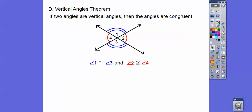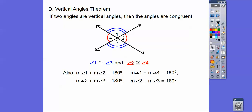The vertical angle theorem says — we just proved it — that if two angles are vertical angles, then they are congruent to each other. So angle 1 is congruent to angle 3, and angle 2 is congruent to angle 4. Also: angle 1 plus angle 2 equals 180, angle 2 plus angle 3 equals 180, angle 3 plus angle 4 equals 180, and angle 4 plus angle 1 equals 180 — they all make up a straight line.